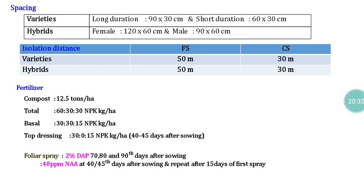Regarding spacing: for long duration varieties, 90 to 30 cm; for medium duration, 75 to 30 cm. For hybrids, the female parental line is maintained at 120 x 60 cm and the male parental line at 90 x 60 cm. Cotton falls under the often cross-pollination category, and the corolla is arranged like a cone shape, restricting entry of foreign pollen. The recommended isolation distance for foundation seed production — both variety and hybrid — is 50 meters; for certified seed production it is 30 meters.